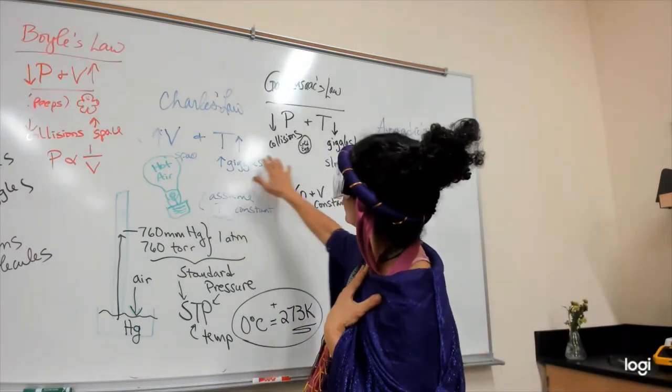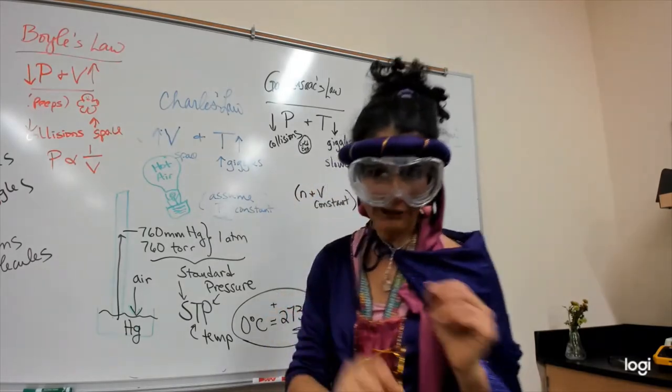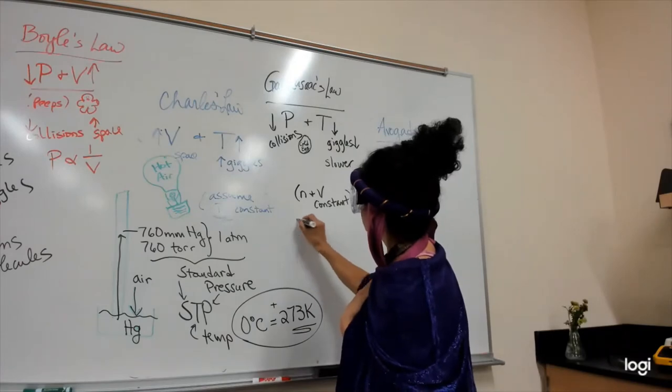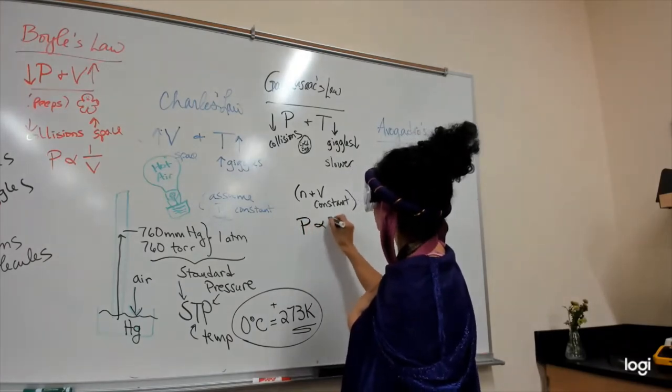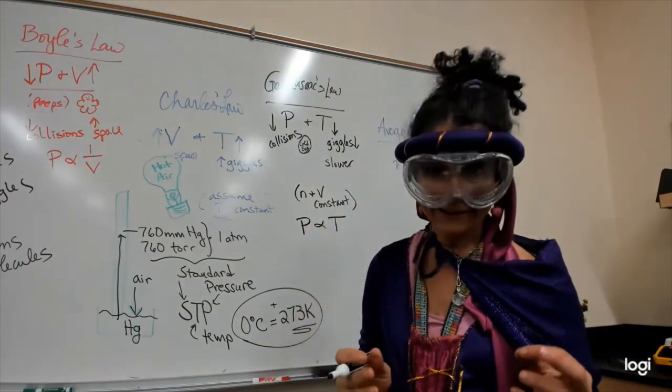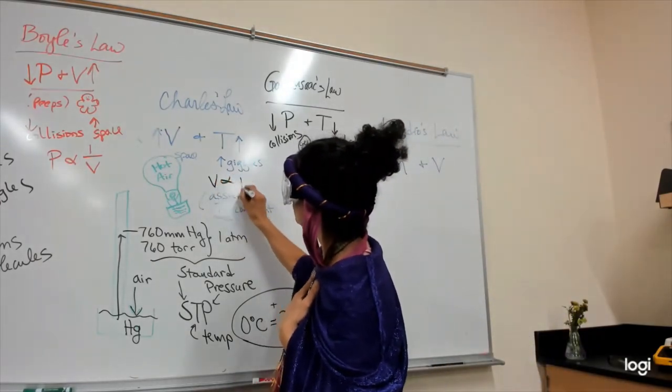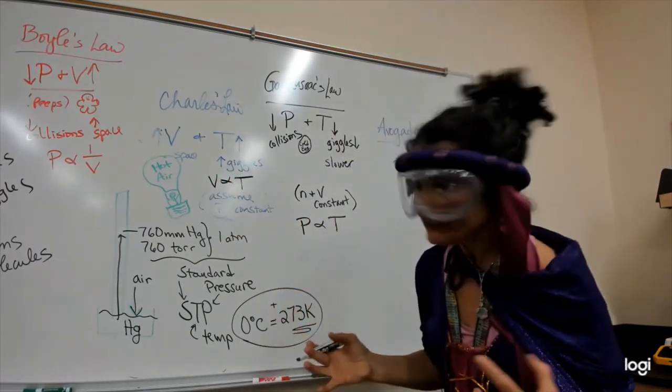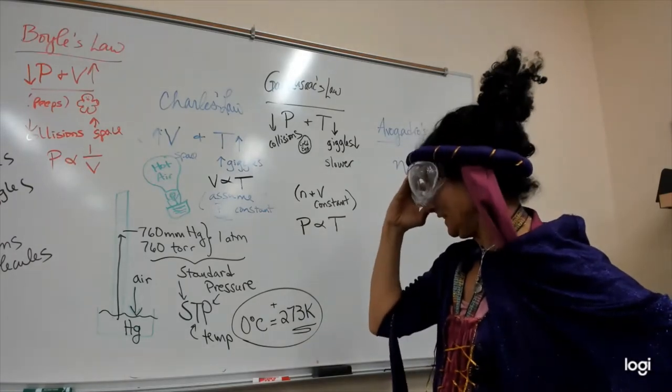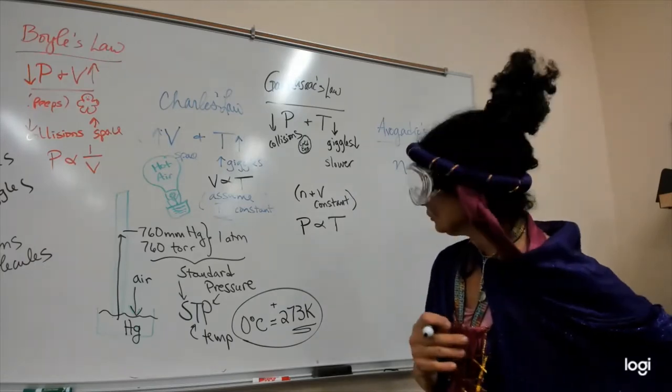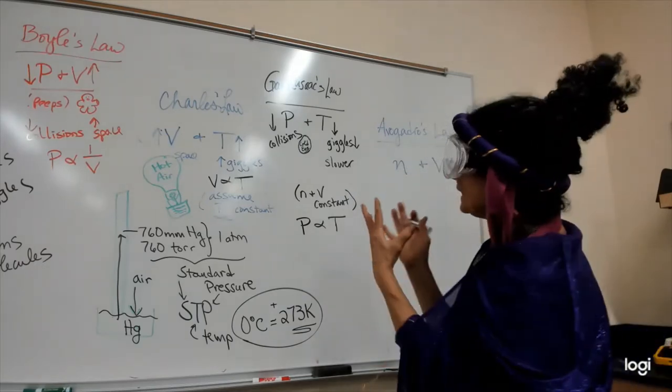Charles Law and Gay-Lussac's Law are direct relationships. If we look at Gay-Lussac's, it would mean that pressure and temperature are proportionately related. Or if we look at Charles, volume and temperature are proportional. One year I wrote this in the very beginning and the students freaked out. They're like, why do you keep drawing a fish in there? It just means proportional.